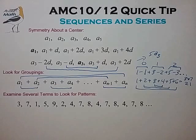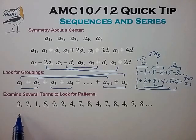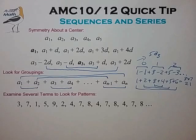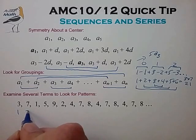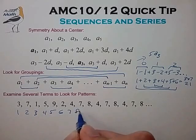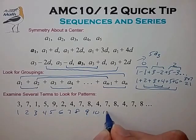The final tip is to examine several terms of any sequence or series to look for patterns to help in analyzing the problem. Sometimes a sequence can look very difficult at the start, but sometimes settles into a pattern — in this case repeating every three terms. What that means is that we can use the term index, such as 7, 8, 9, 10, 11.